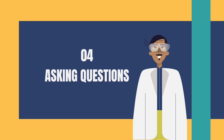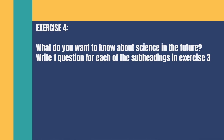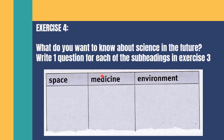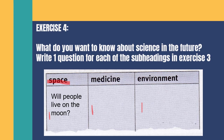This part is where you ask questions. Exercise 4: what do you want to know about science in the future? Write one question for each of the subheadings from Exercise 3 — Space, Medicine, and Environment — one question each. For example, regarding space: 'Will people live on the moon?' For medicine and environment, write down what you want to know about their future. Only one question each — very simple.